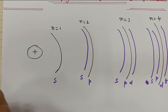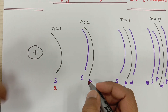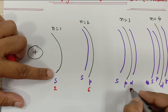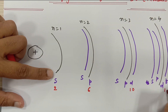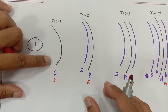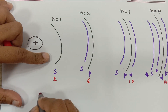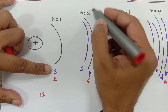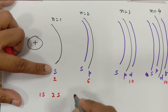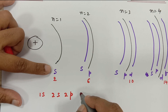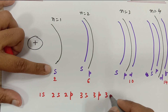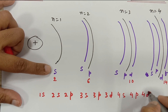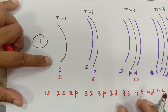The maximum electrons that can be accommodated: in S it is 2, in P it is 6, in D it is 10, and in F it is 14. So the first orbit has 1S; the second orbit has 2S and 2P; the third orbit has 3S, 3P, 3D; and the fourth orbit has 4S, 4P, 4D, 4F — and in the fifth we continue like that.